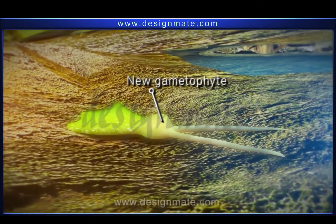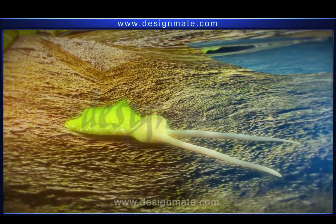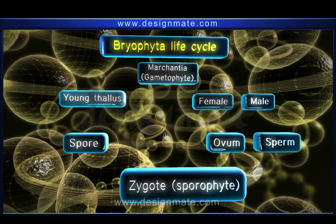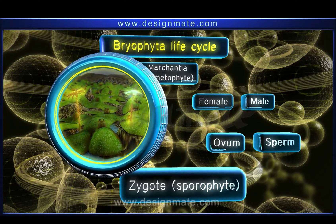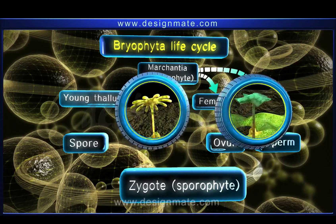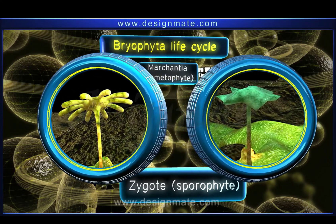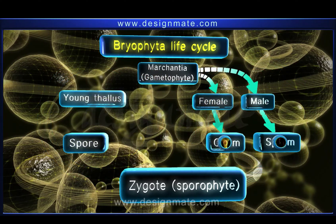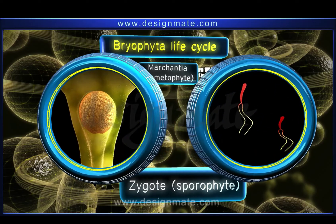A recap of this life cycle shows that in bryophytes like Marchantia, the dominant stage in the life cycle is the gametophyte. This forms the male and female sex organs, which produce male and female gametes.